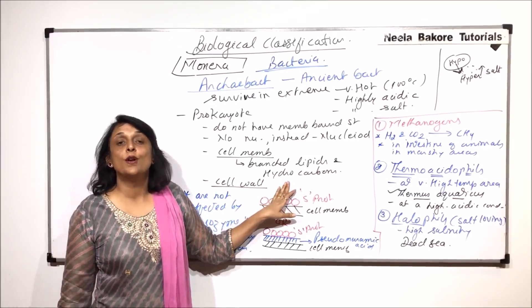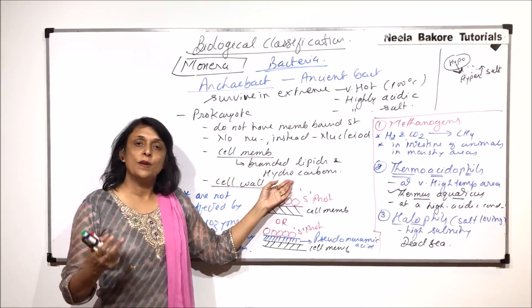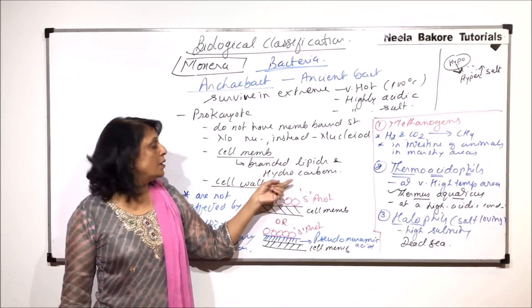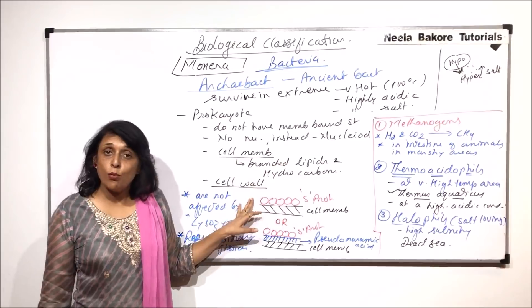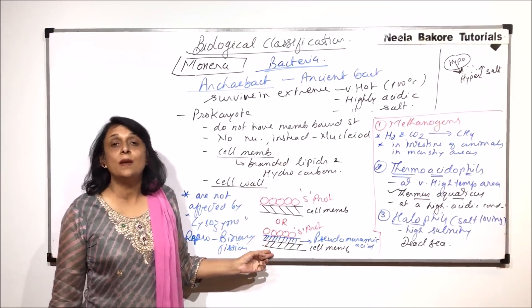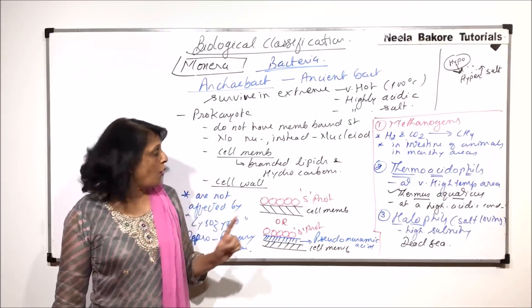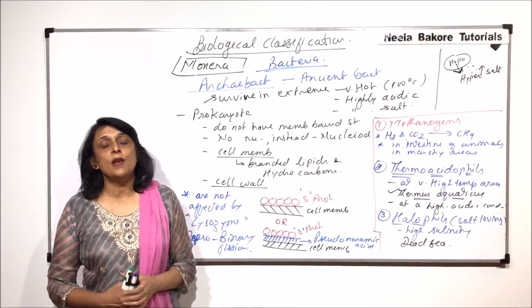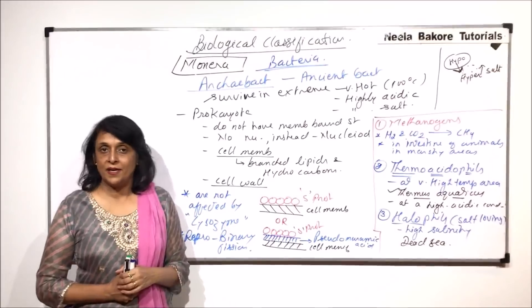Cell membrane is also different from the typical eubacteria which is a normal phospholipid bilayer. Here it is branched structure. The lipids are also branched. Hydrocarbons are also there. And the cell wall outside the cell membrane or plasma membrane there is an additional layer of surface proteins which are very unique. And these two layers protect these cells from all these extreme conditions.